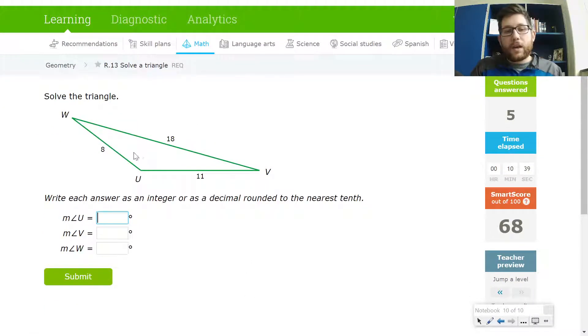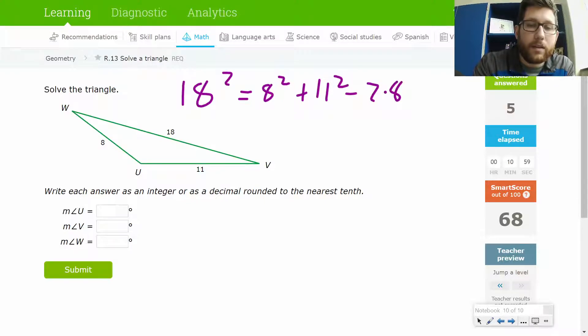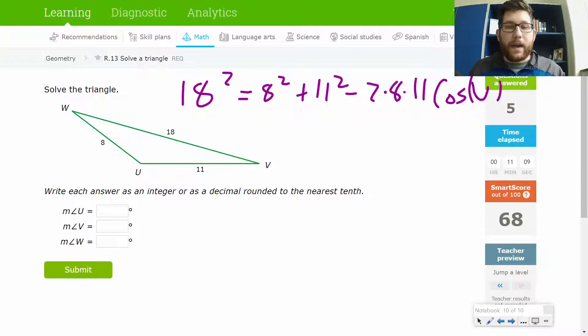Now notice in a case like this, the first thing you have to solve for is you have to solve for one of the angles. So I would start by solving with law of cosines. I'll set it up. I'm not going to solve it here, but if I'm going to solve for u, what I'm going to do is I'm going to set this thing up 18 squared is equal to 8 squared plus 11 squared minus 2 times 8 times 11 times cosine of the angle that I'm looking for, which in this case is u. And then I'd solve that thing out, solve for angle u. It's going to be a little bit of a difficult process, but you can do it.